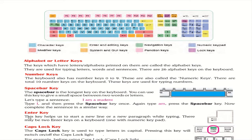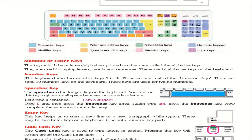The Enter key helps us start a new line or new paragraph while typing. There may be two Enter keys on a keyboard. The Caps Lock key is used to type letters in capital — pressing it switches the Caps Lock light on or off. Some keyboards have this indicator light and some do not.